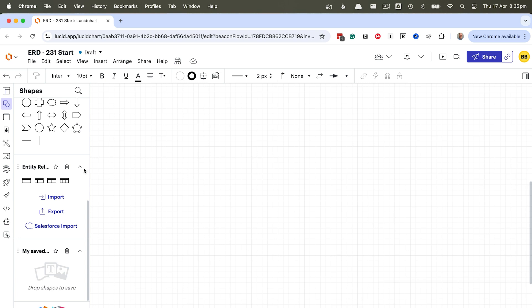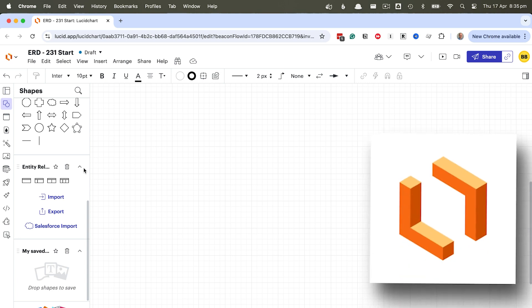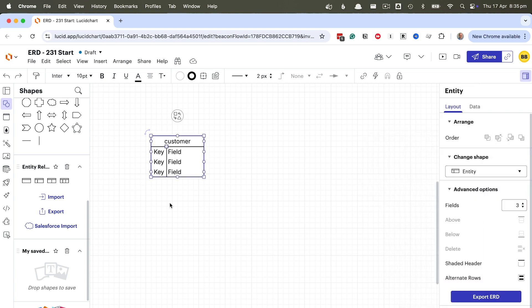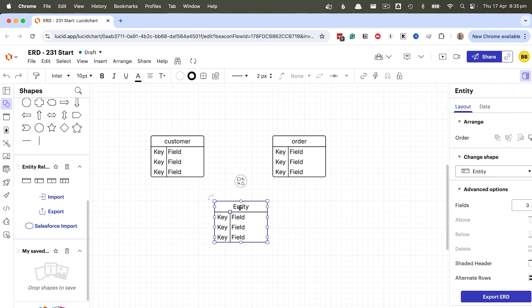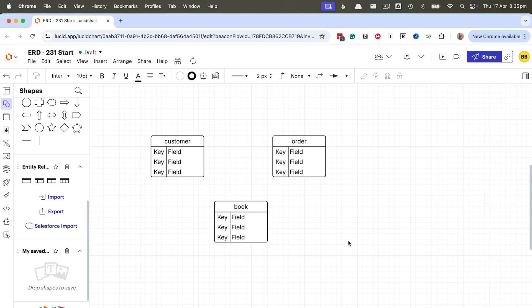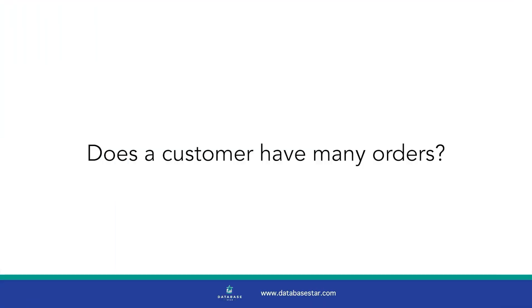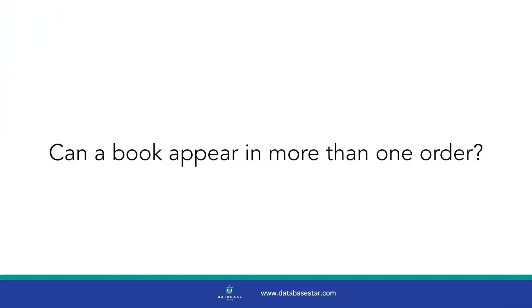I'll open a blank page in my favourite tool for designing ERDs called Lucidchart. I'll add a box for each of these three nouns, which can be our tables. From here, we can start refining the relationships between these tables or entities. We would need to think about the answers to some questions: Does a customer have many orders? Can a book appear in more than one order? That's when you can start elaborating your ERD and thinking about primary keys and foreign keys.